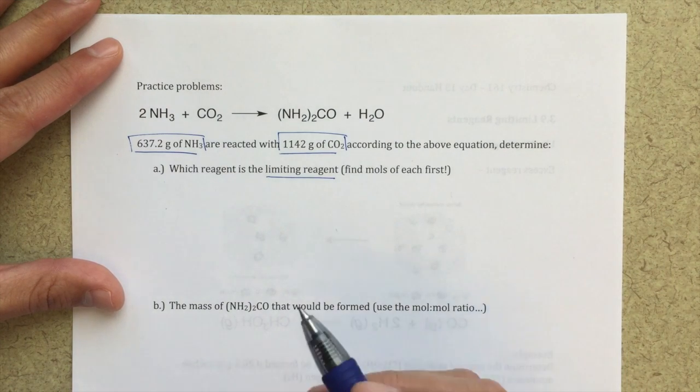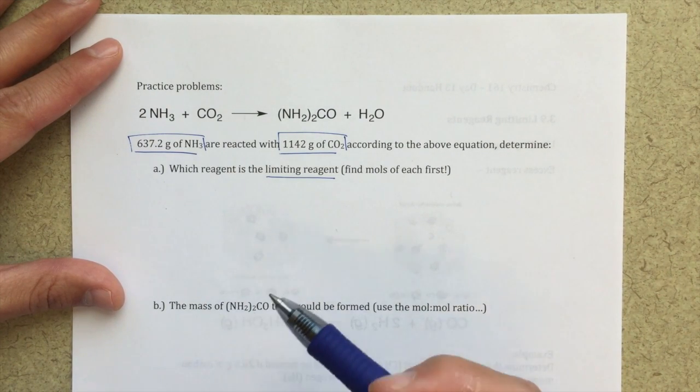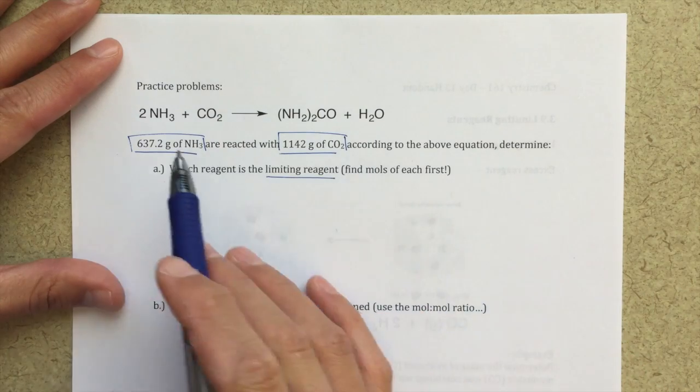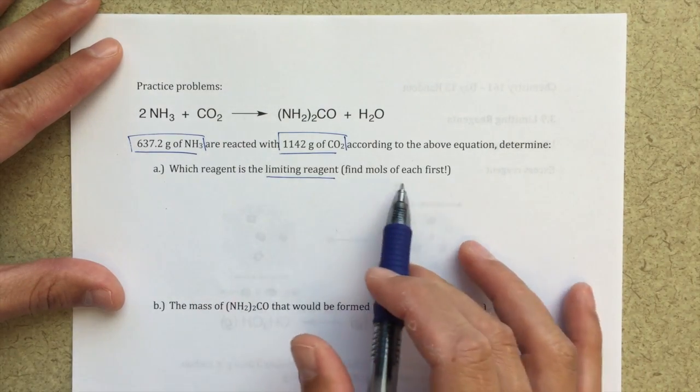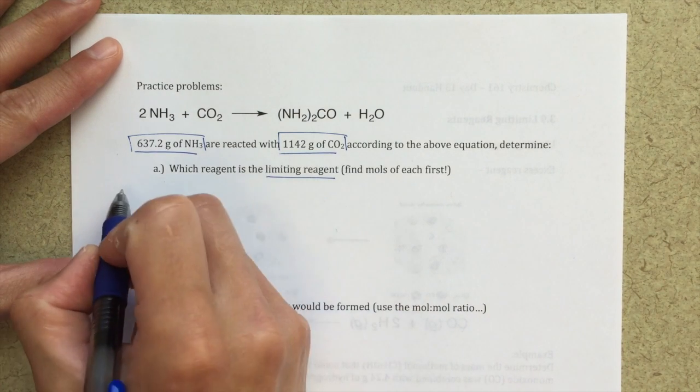So the limiting reagent is going to be the reagent that runs out first, and really to figure that out, we need to use these mole ratios, but we also need to work in moles, and that's why it says find the moles of each first. So let's go ahead and do that.